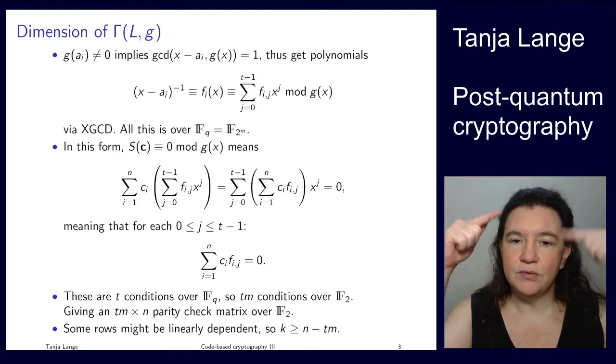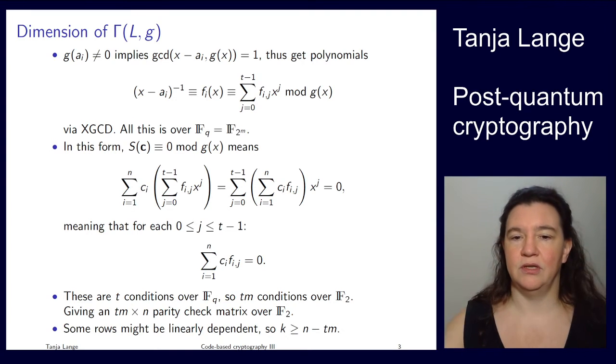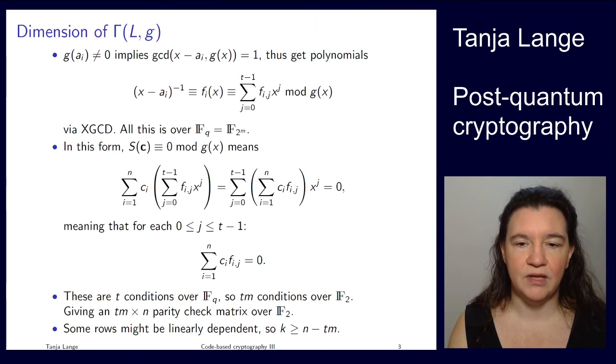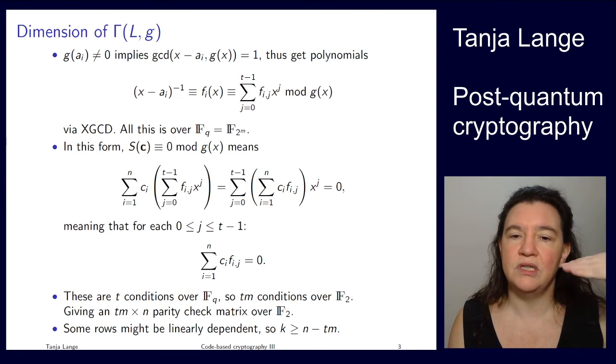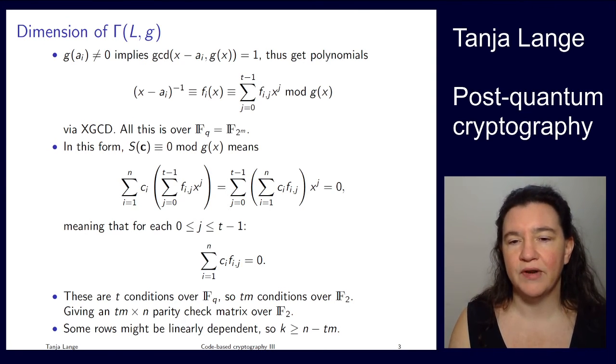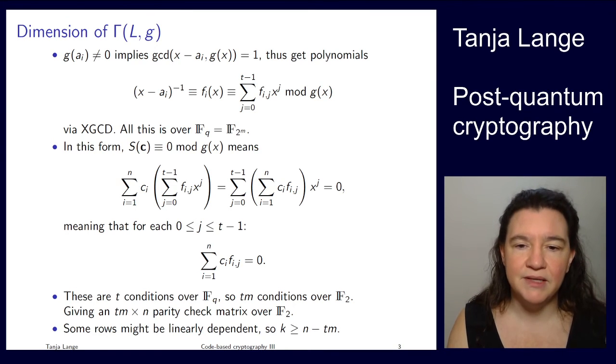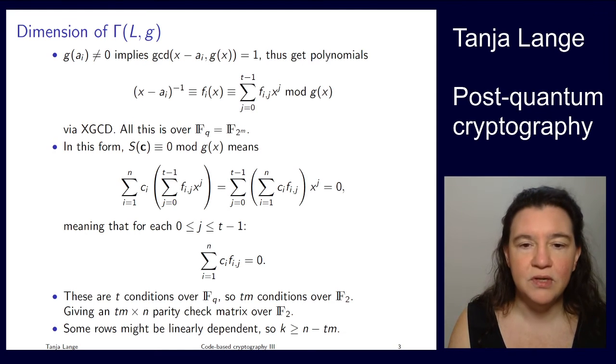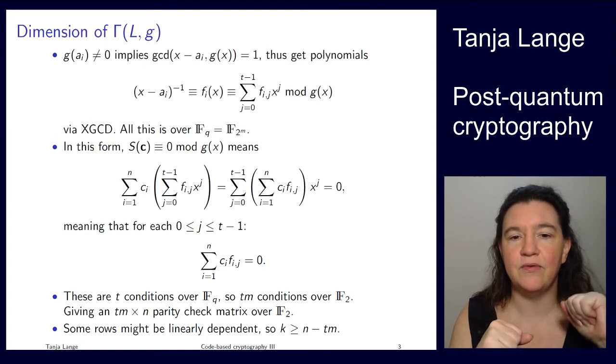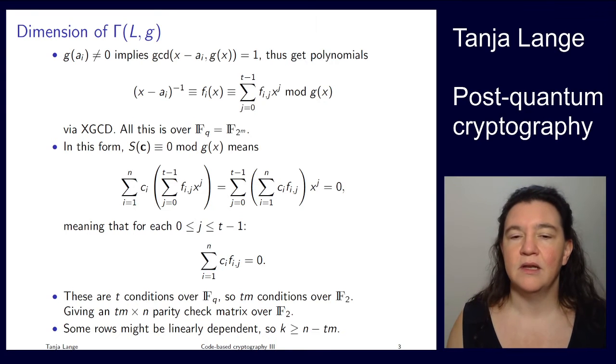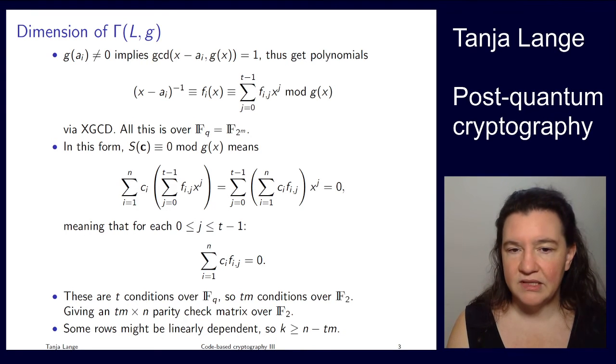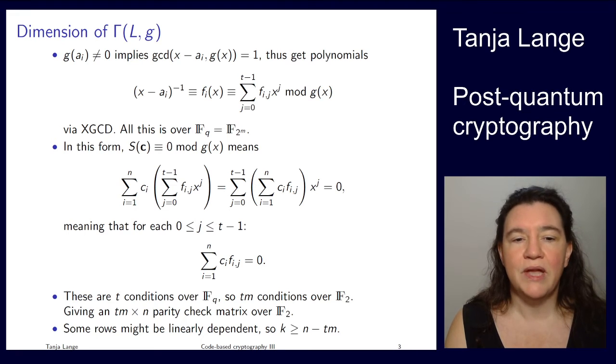However, each of those is actually m conditions over the base field. So we're having t conditions over F2 to the m, and that turns into tm conditions over F2. So then we're also sorting by a basis of F2 to the m over F2. So that's dimension m over one another. So we have a basis with m elements, and so that's where this extra factor comes from.